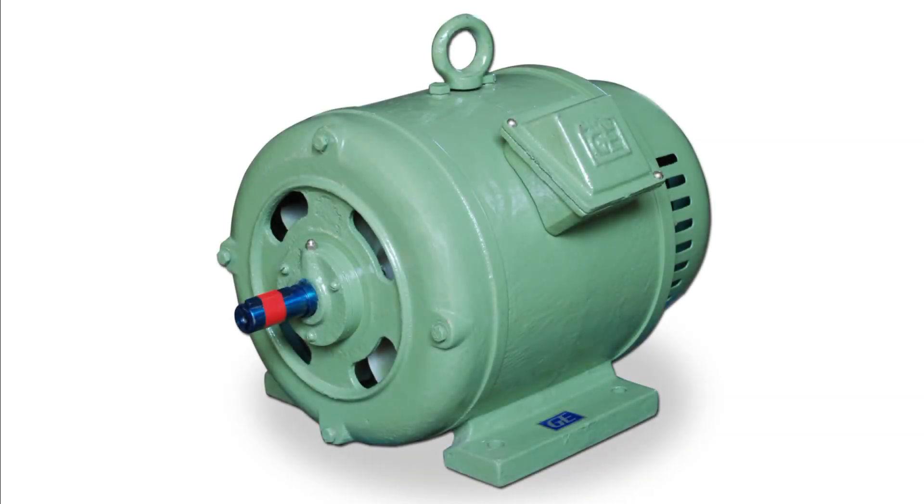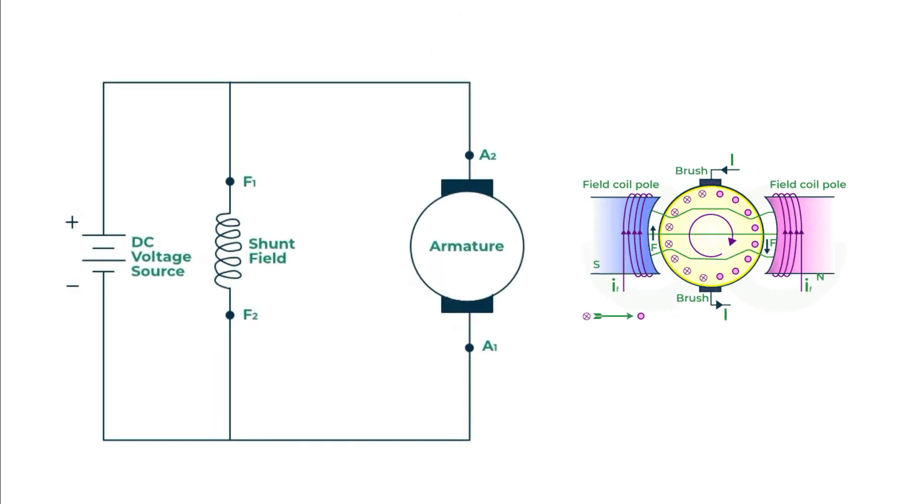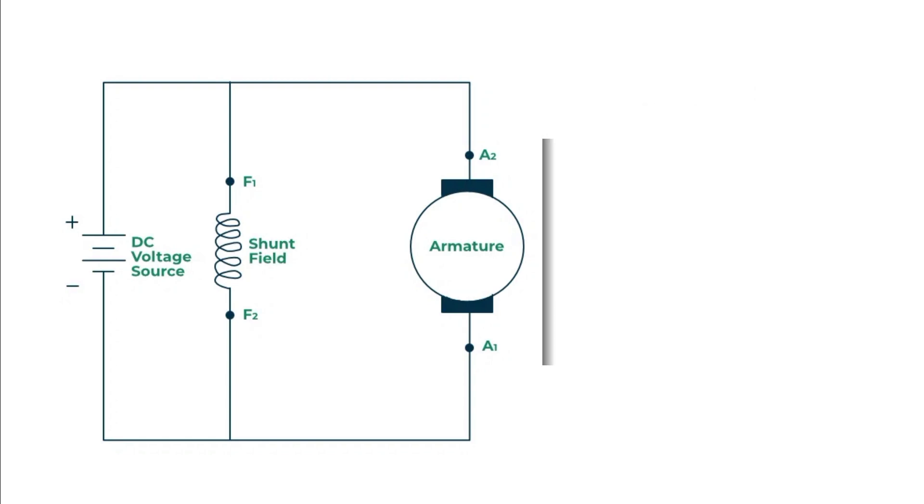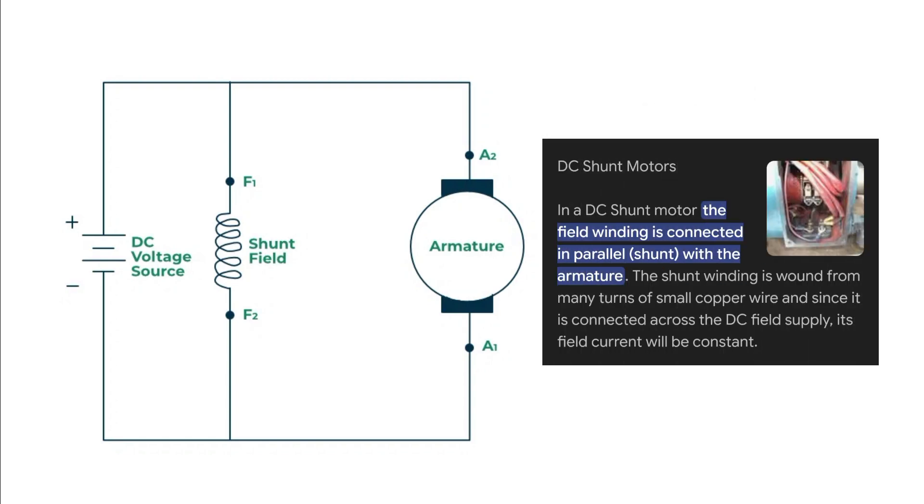Now let's talk about the shunt wound DC motor. A shunt wound DC motor has its field winding connected in parallel with the armature winding. This means that the voltage across the field winding is the same as the voltage across the armature winding.